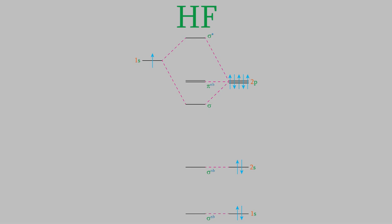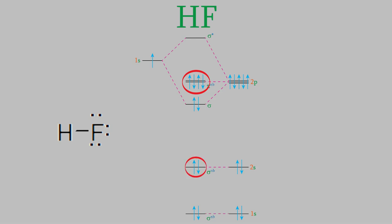Finally, we fill in the energy levels with arrows representing the 10 electrons in the system. The sigma orbital shared by the two atoms represents the bond, containing two electrons. The remaining occupied orbitals include four electrons in the non-bonding pi orbitals — that's two pairs — plus the electrons in the highest occupied s orbital. These are the electron pairs we usually draw in a Lewis dot structure.